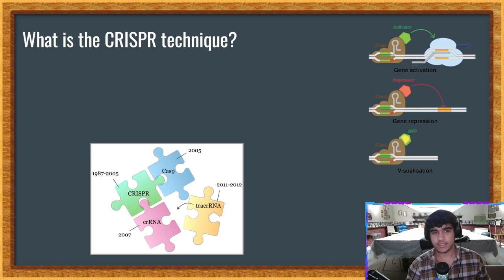CRISPR is a genetic engineering technique used in molecular biology by which the genomes of living organisms may be modified. It is based on a simplified version of the bacterial Cas9 reaction for their antiviral defense system.